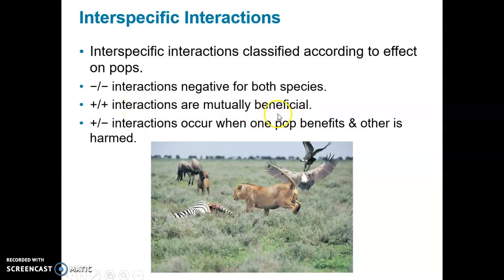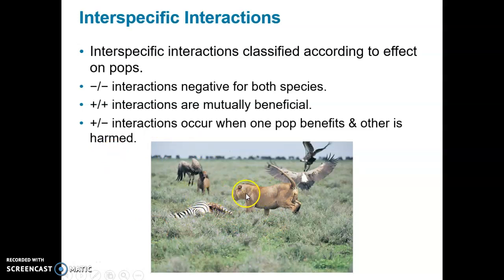If it's a plus-minus (positive-negative) interaction, that's when one population benefits and the other is harmed. Consider the lion and the zebra — the lion is benefited by the food, and the zebra is harmed by being killed and consumed. So predator-prey relationships fall into this plus-minus category.